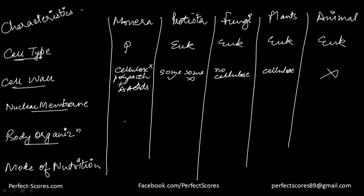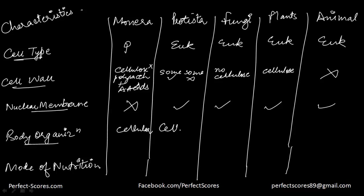What about the nuclear membrane? Nuclear membrane is absent in Monera; it's present in all the others. Remember, only kingdom Monera is the one that does not have any nuclear membrane. What about body organization? In Monera this is cellular — that means only one cell. In Fungi it can either be multicellular or it can have some kind of loose tissue.